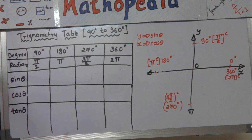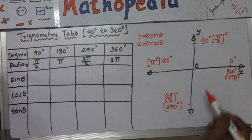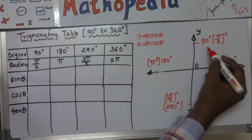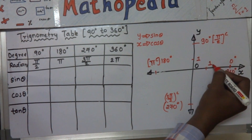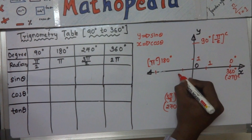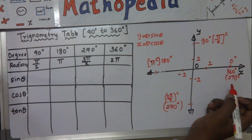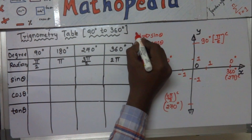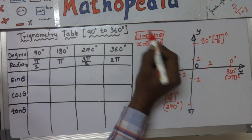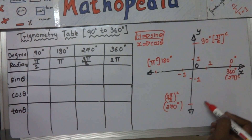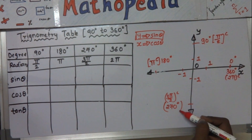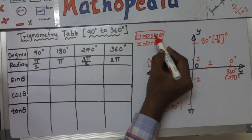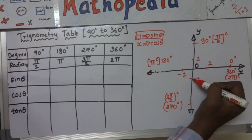To relate the axis with the ratio, I am going to take a unit value of 1 on both axes: plus 1 and minus 1 on the y-axis, and plus 1 and minus 1 on the x-axis. The two angles that lie on the y-axis are 90 degrees and 270 degrees (3 pi by 2), so the values of sine theta for these will be plus 1 and minus 1.